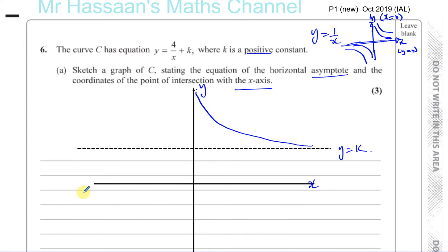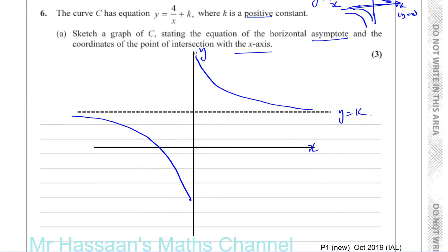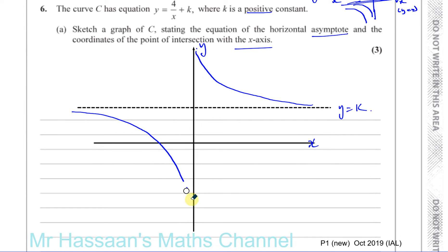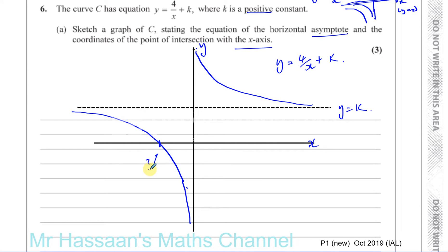On this side, it would normally be down here, but everything moves up. So we can see that it's going to cross the x-axis somewhere over there. It's going to look something like this, getting closer and closer to the asymptote without actually touching it. So this is y equals 4 over x plus k.